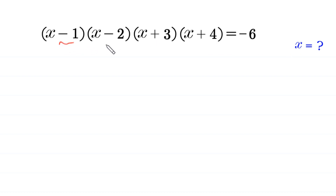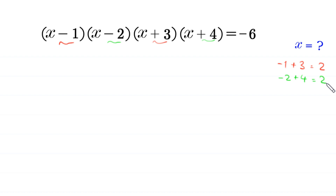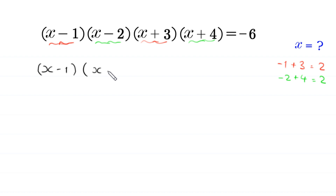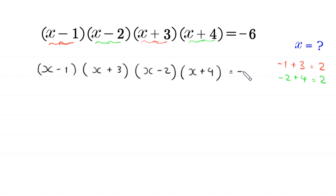Since negative 1 plus 3 is equal to 2, and negative 2 plus 4 is equal to 2, we regroup: we write x minus 1 with x plus 3, and x minus 2 with x plus 4, like this: x minus 1 times x plus 3 times x minus 2 times x plus 4 is equal to negative 6.